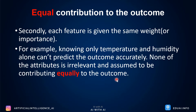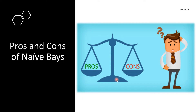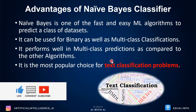Now let's look at the pros and cons of Naive Bayes. The advantages are: Naive Bayes is one of the fastest and easiest machine learning algorithms to predict the class of a dataset. It is very fast because it just does mathematics and works on probability. It can be used for both binary and multi-class classification, and it performs especially well in multi-class predictions compared to other algorithms.